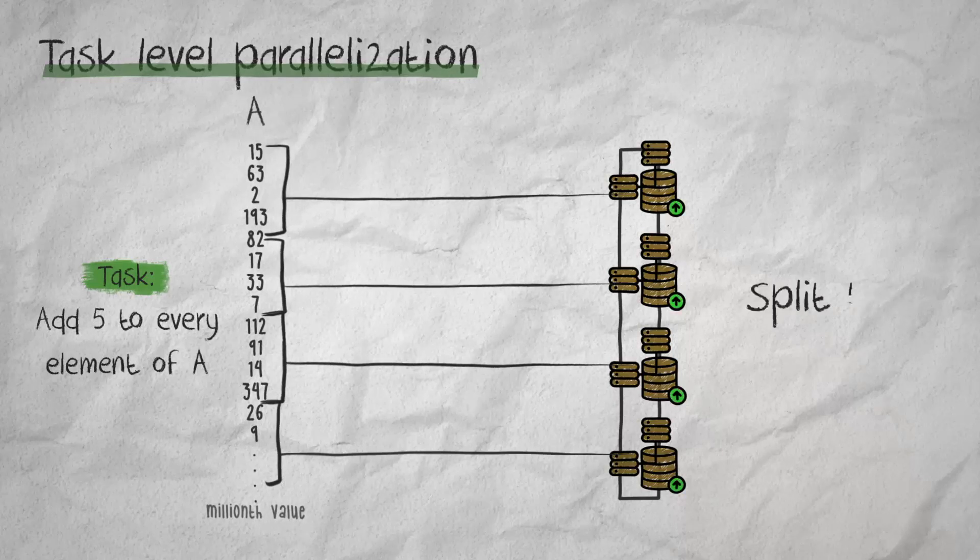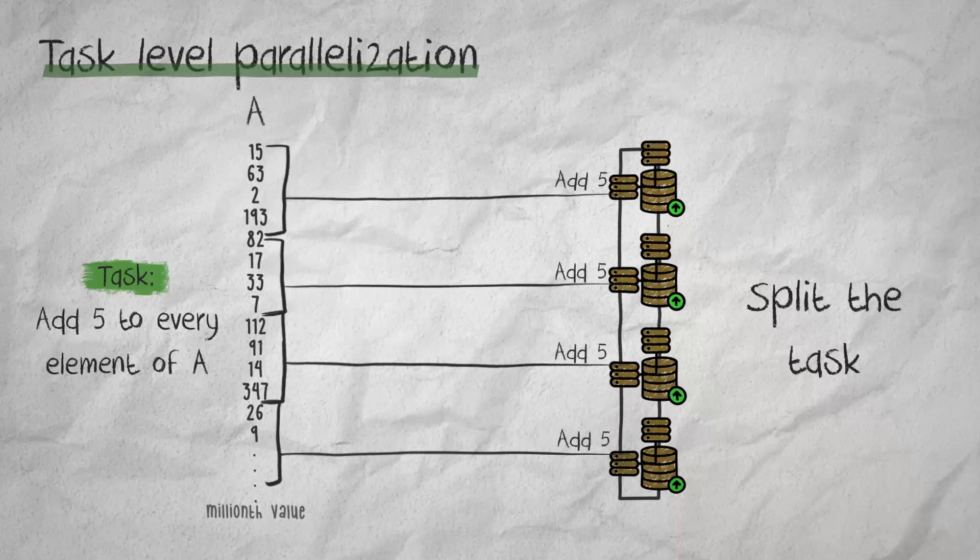Next, we split the task. That is, each node can perform the task of adding five to its portion of the data. Individual outputs from each node can then be combined to get the final results.